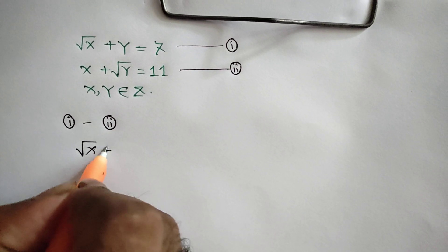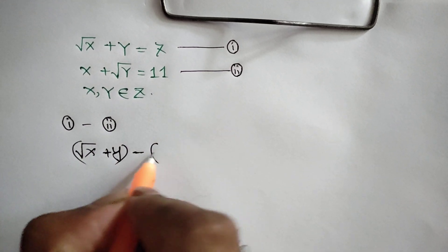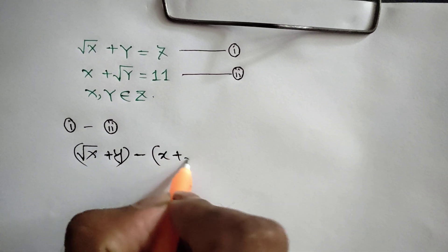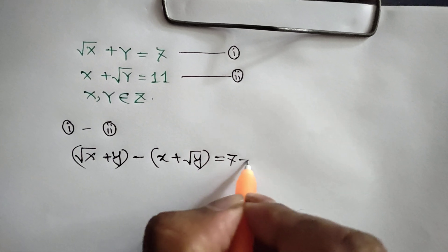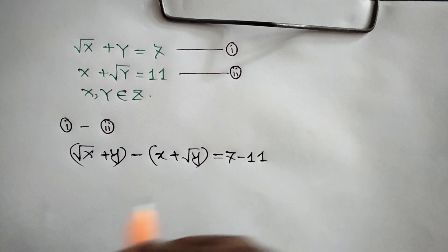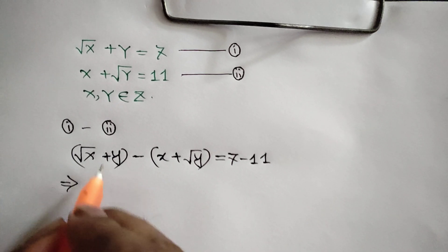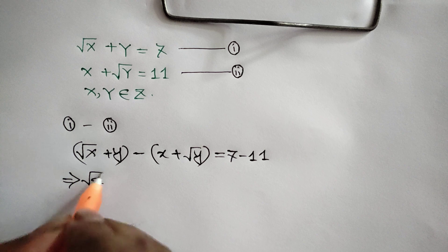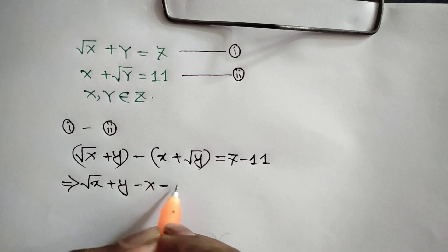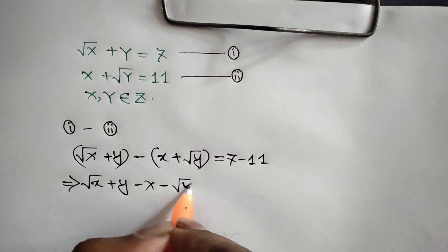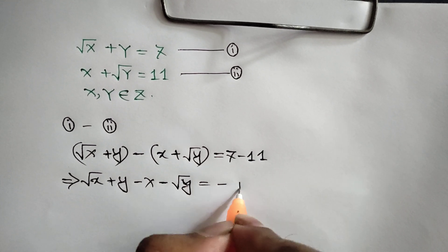Square root of x plus y minus x plus square root of y is equal to 7 minus 11. Or: square root of x plus y minus x minus square root of y is equal to 7 minus 11, that means negative 4.